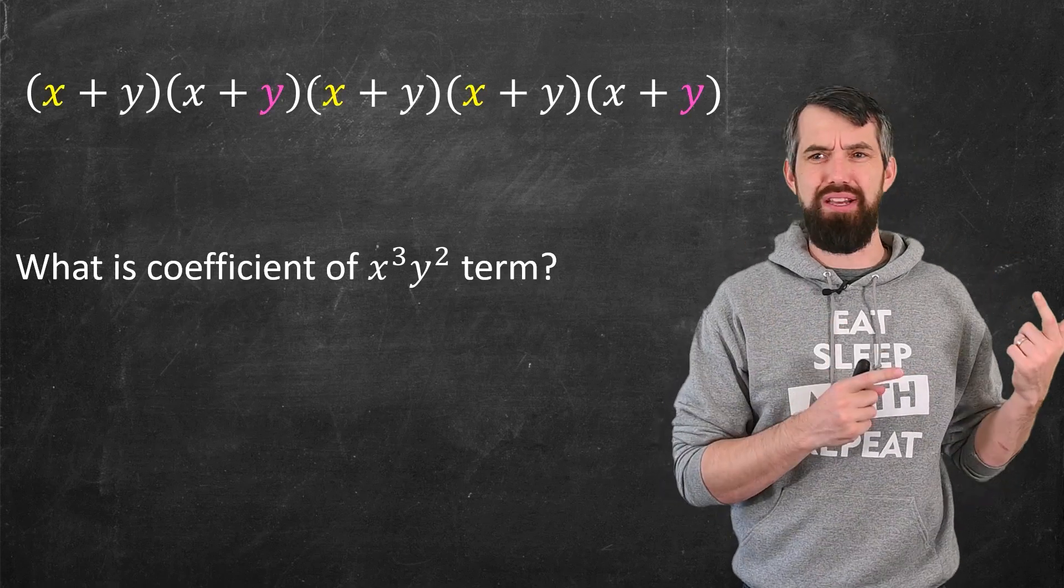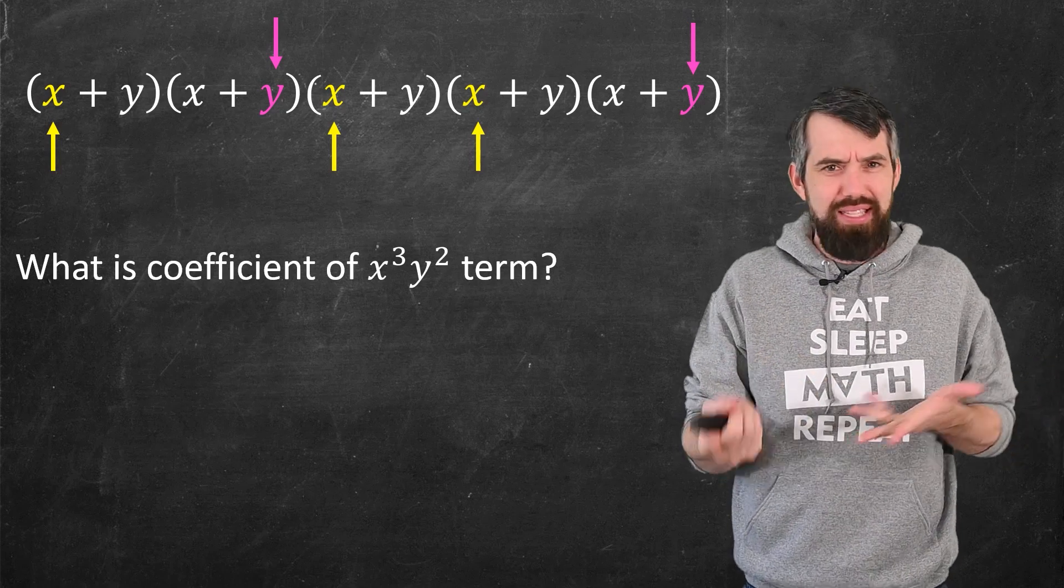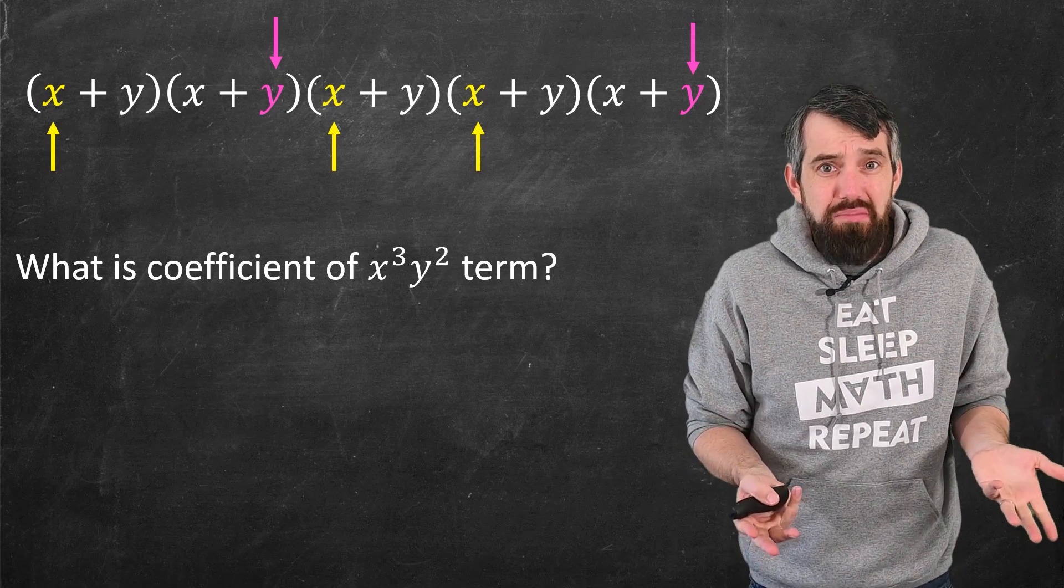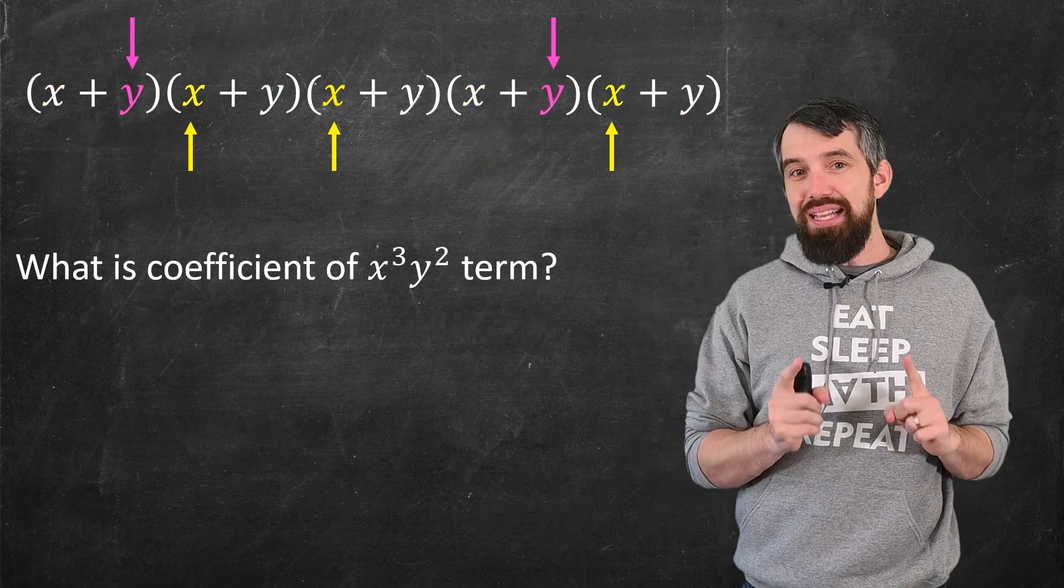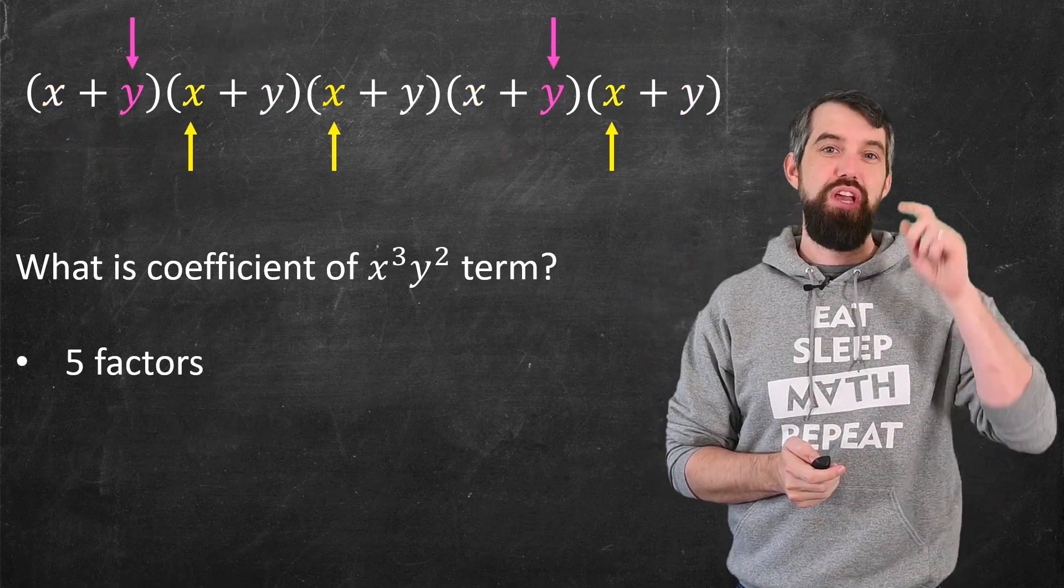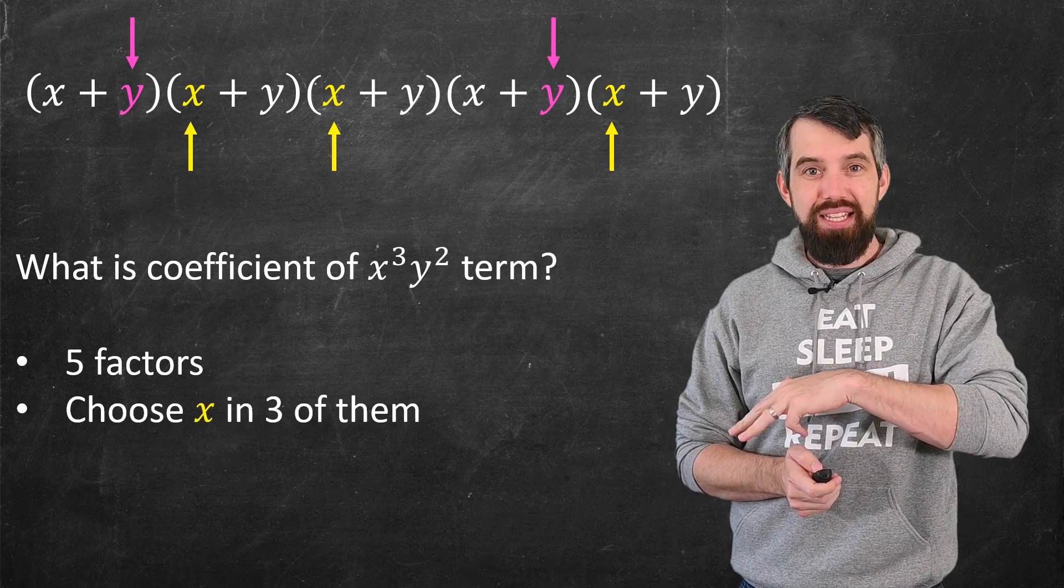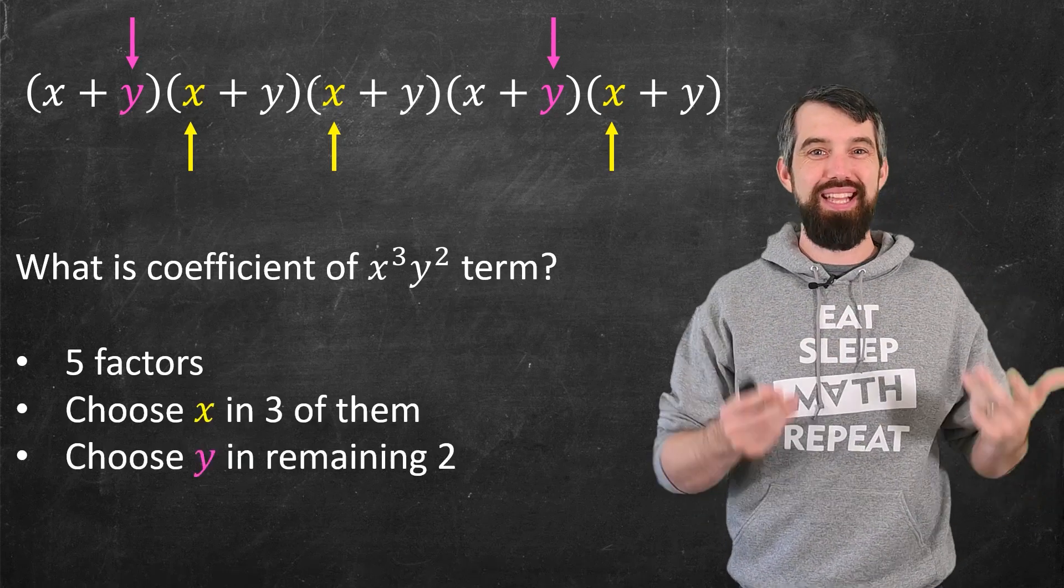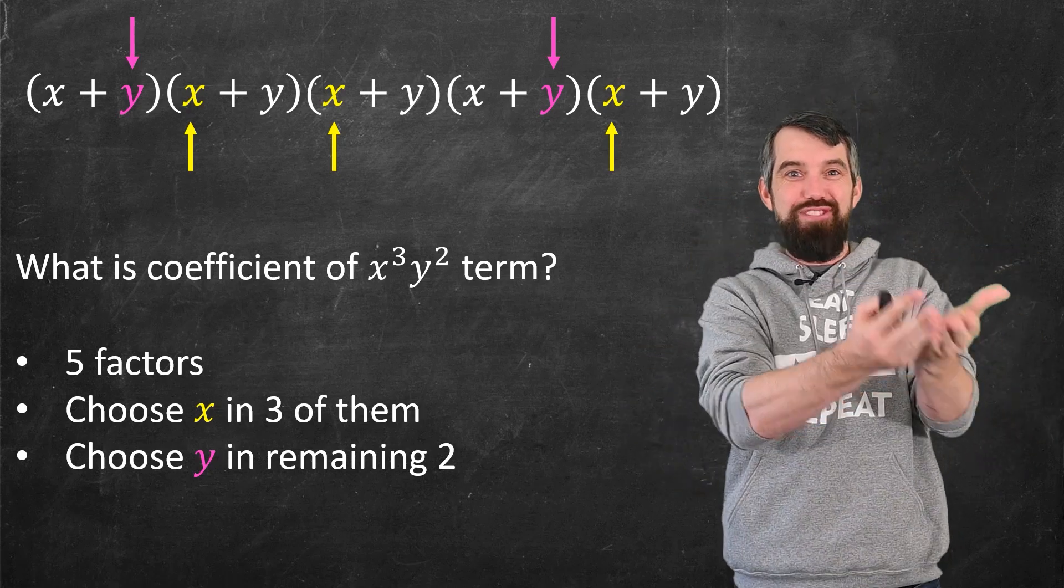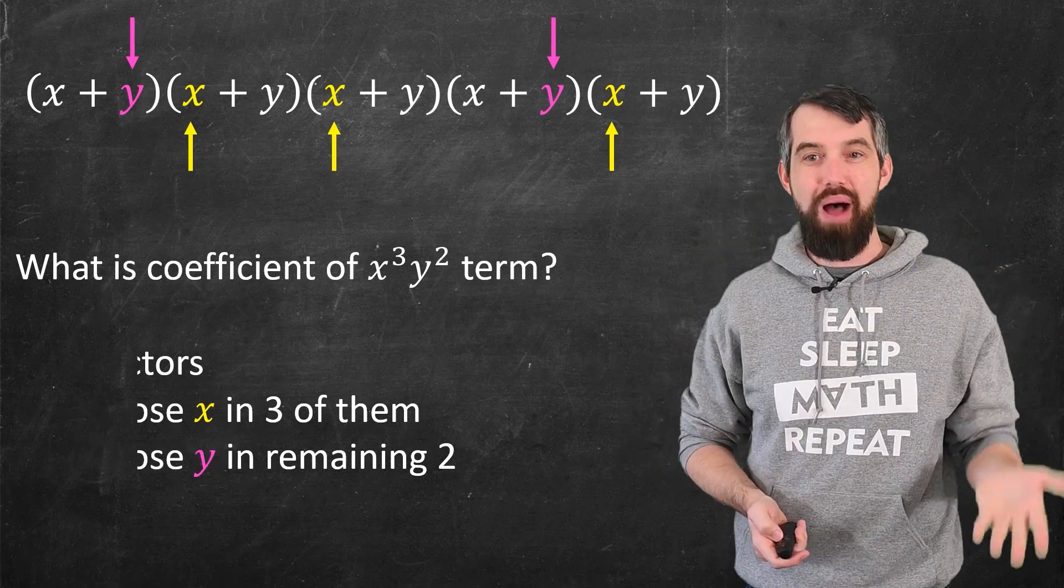Maybe something like this. I'll choose the x in the first, third, and fourth factor, and the y's in the second and the fifth. This is just one choice, right? There's multiple ones. I could choose, for example, this other choice as well. But it has to be, of the 5 factors, you're choosing 3 of those to be an x, and 2 of those to be a y. And as soon as I phrase it like this, that combinatorial process of 5 choose 3 may come to mind.